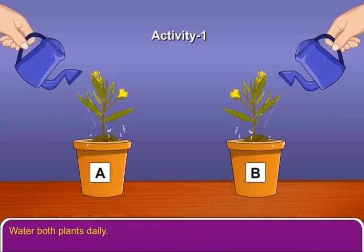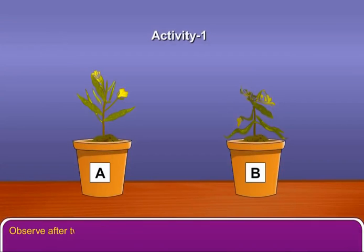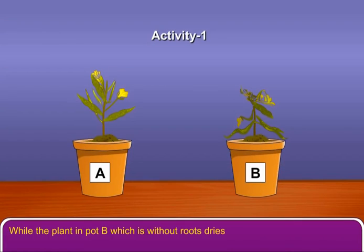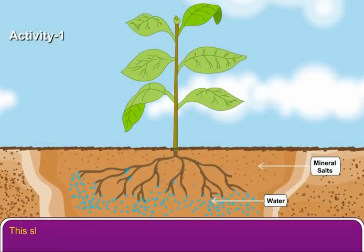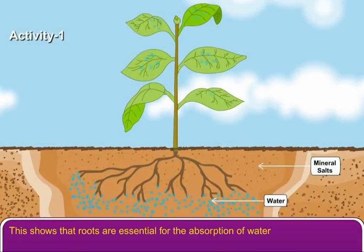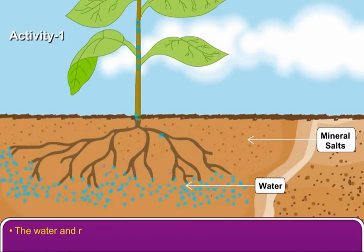Water both plants daily. Observe after two days. The rooted plant in pot A is normal, while the plant in pot B, which is without roots, dries up. This shows that roots are essential for the absorption of water and minerals from the soil.